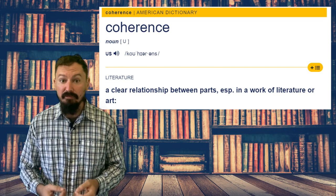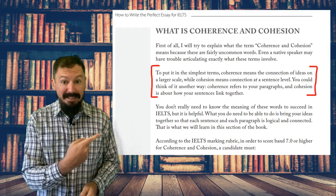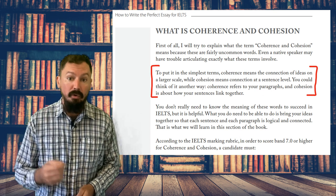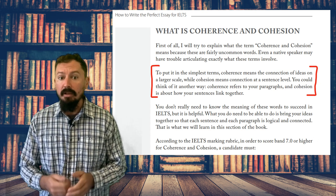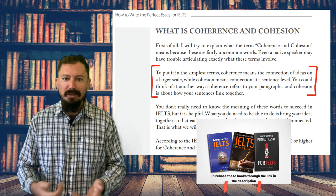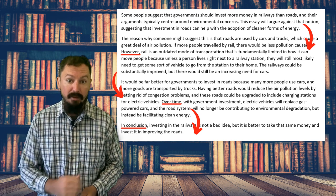After all, you could probably learn the basics of structure in less than one hour. Perhaps we should first consider what those two words mean because they're not exactly the same. Coherence is defined by the Cambridge Dictionary as a clear relationship between parts, while cohesion means the state of sticking together. In my 2019 book, How to Write the Perfect Essay for IELTS, I explained that coherence means the connection of ideas on a larger scale, while cohesion means connection at a sentence level. Coherence refers to your paragraphs and cohesion is about how you link your sentences together.